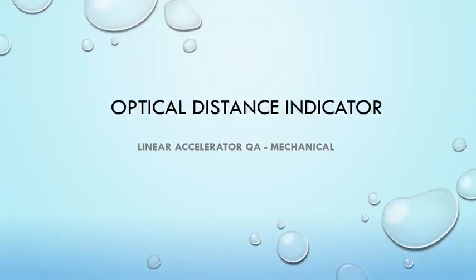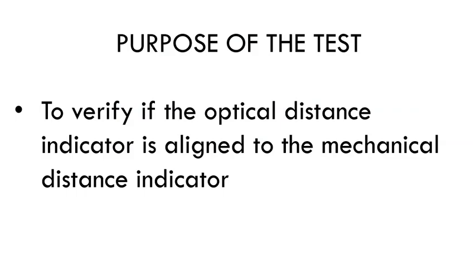This is the test to check the optical distance indicator — part of the mechanical QA for the linear accelerator. The purpose of the test is to verify if the optical distance indicator is aligned to the mechanical distance indicator.